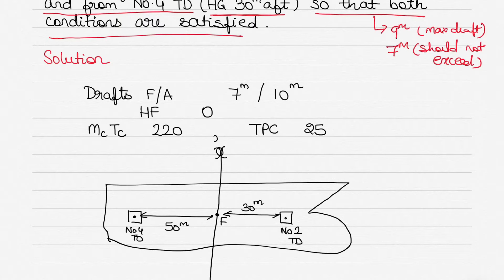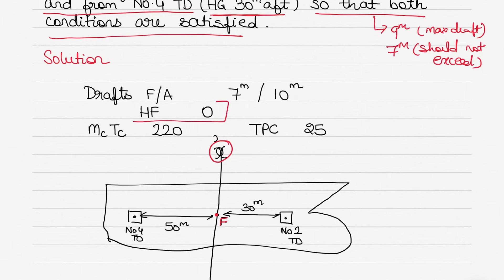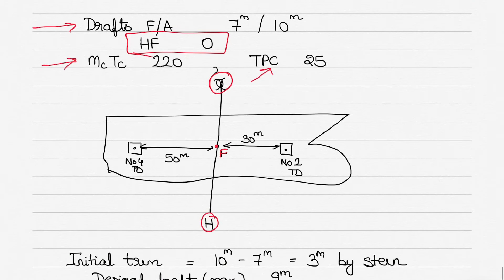Let's get started. We have drafts forward and aft as 7 meters and 10 meters. In the diagram, the letter H denotes the midship section of the vessel. We know the center of rotation coincides with midship because HF is zero, so F is the center of rotation — the point about which the ship pivots or trims. MCTC is 220 and TPC is 25. We have also shown where cargo has to be discharged.